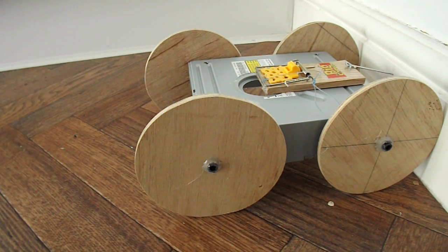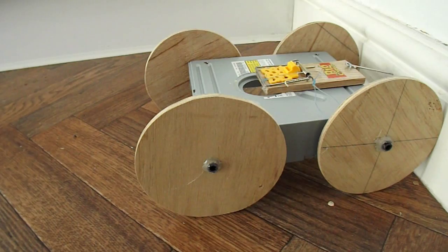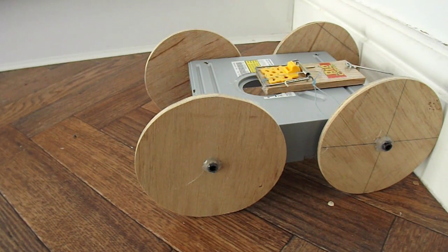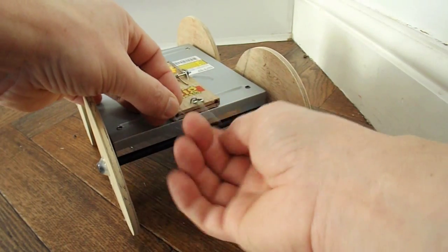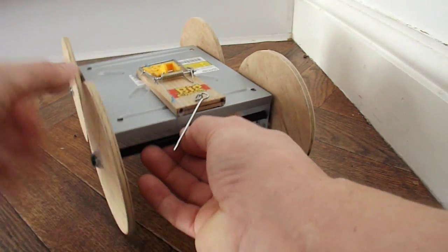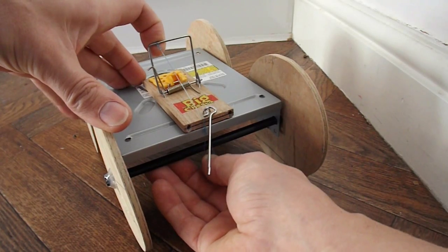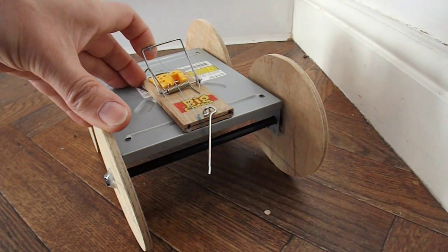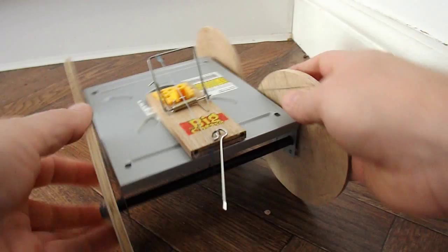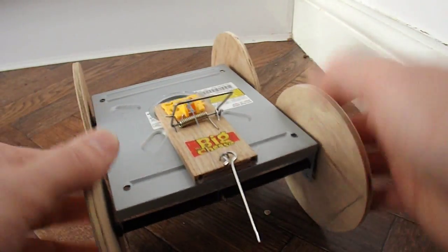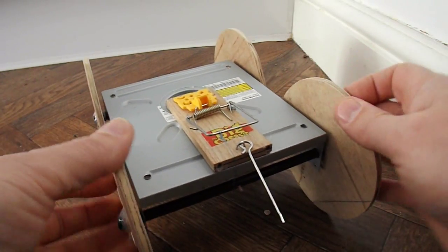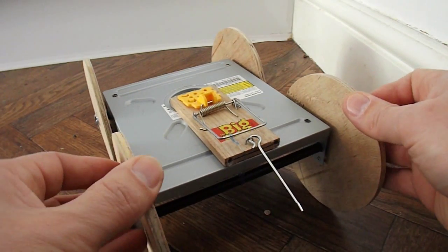Right, test run for the mousetrap DVD drive. We're in my kitchen. I'm afraid the washing machine's on so there's a bit of background noise. Okay, fishing line around the peg on the back axle. Wind it up.